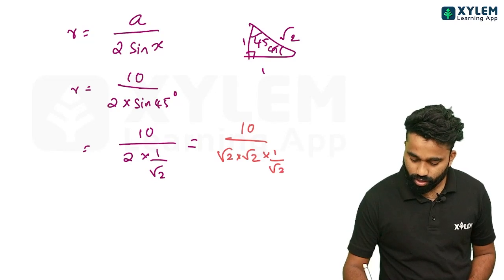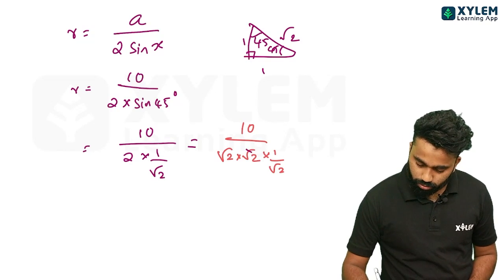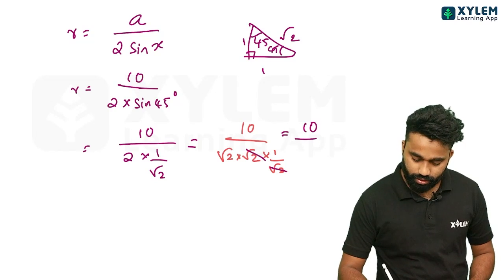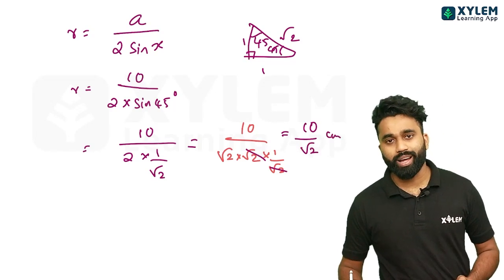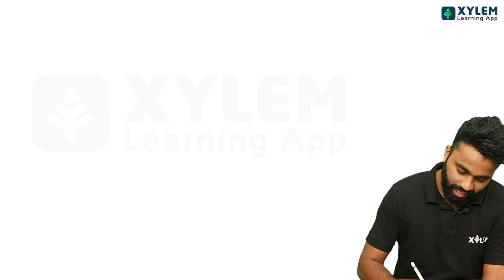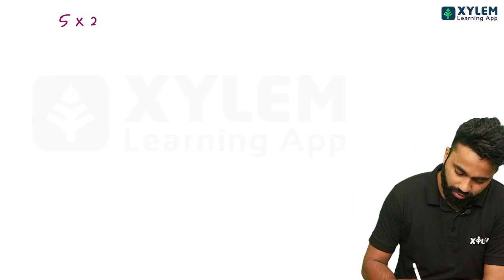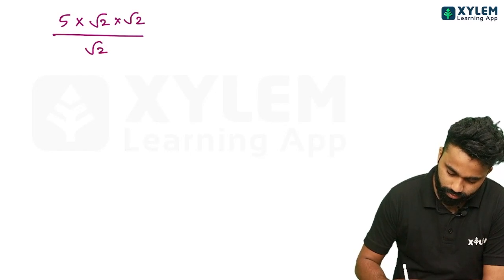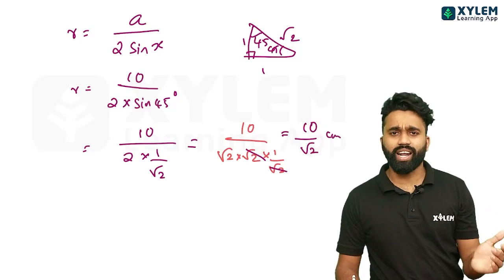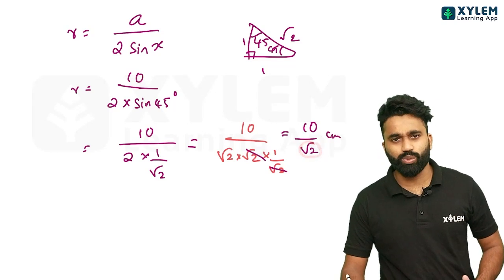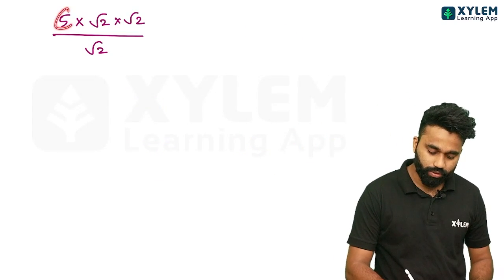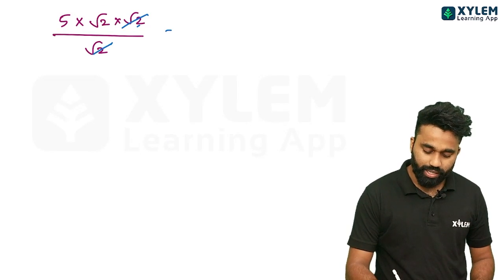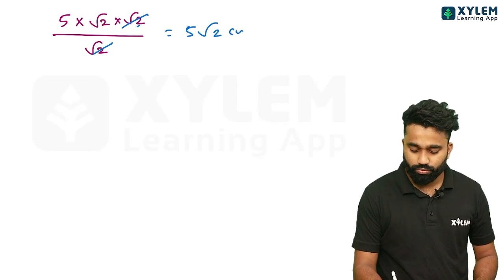Now 1 by root 2. This root 2 and this root 2, that is ten by root 2. We have 5 times 2. If you say 5 × 2 × 2, it is root 2. This is 10. We have to write this root 2, so we have 5√2. We have to write 5√2 cm as the answer.